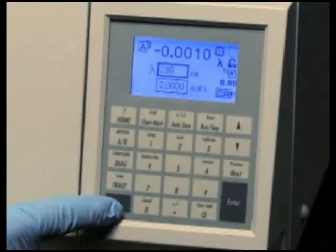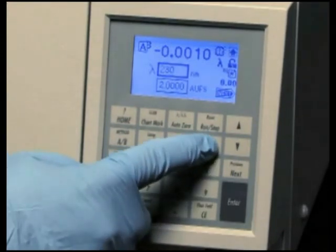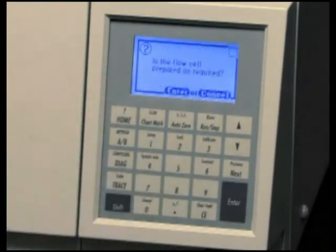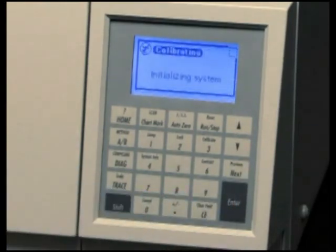To calibrate the detector manually, press Calibrate from the detector keypad. A message appears asking whether the flow cell is properly prepared. The flow cell is properly prepared after the cuvette is removed and the flow cell is wetted and flowing with a transparent solvent. Waters recommends methanol or water. Press Enter to continue the calibration cycle.